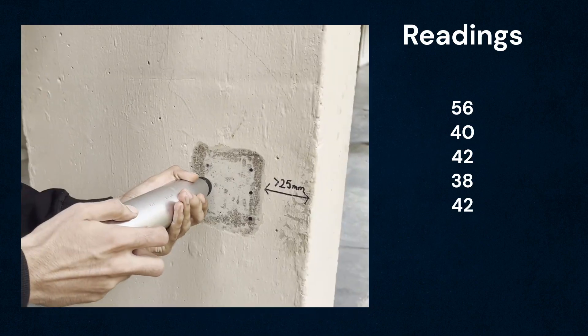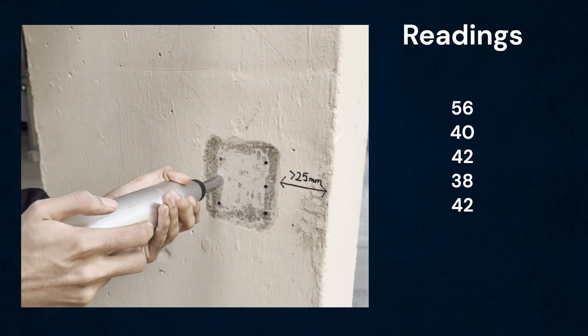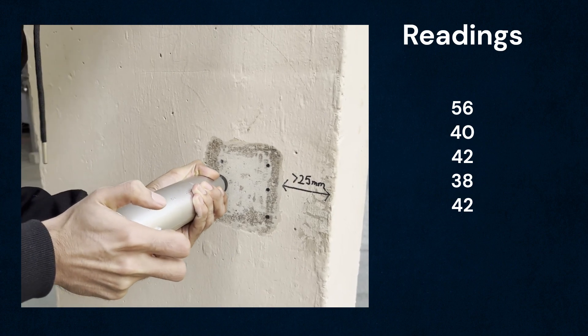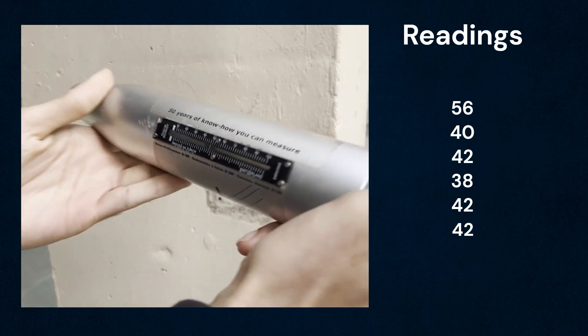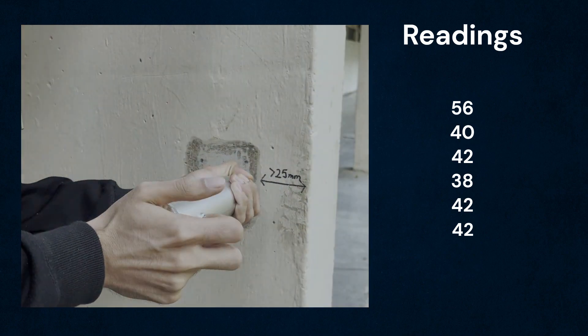the rebound hammer can be held at intermediate angles also, not necessarily normal to the surface, but in each case, the rebound number will be different for the same concrete.